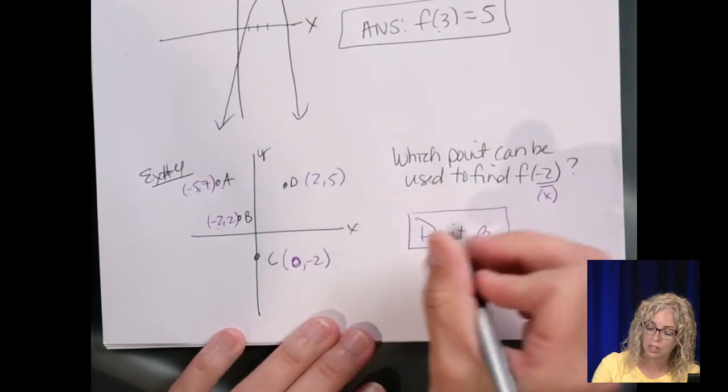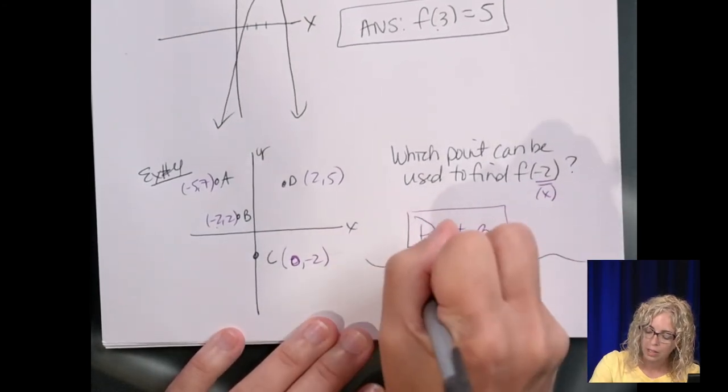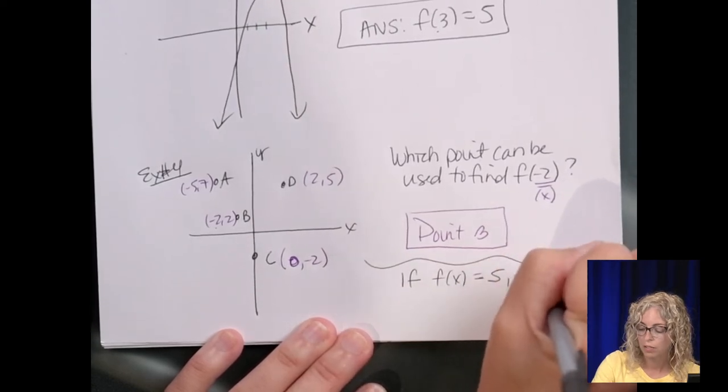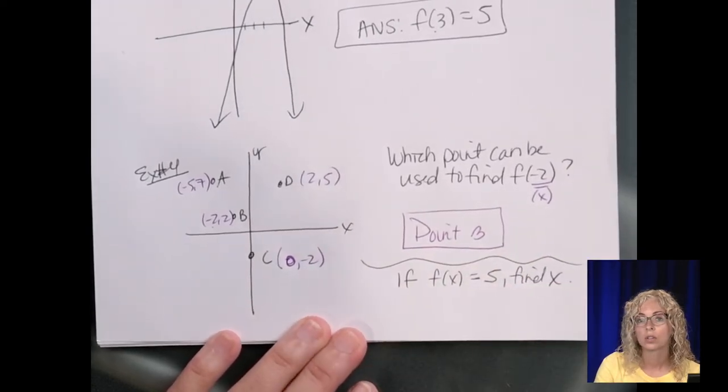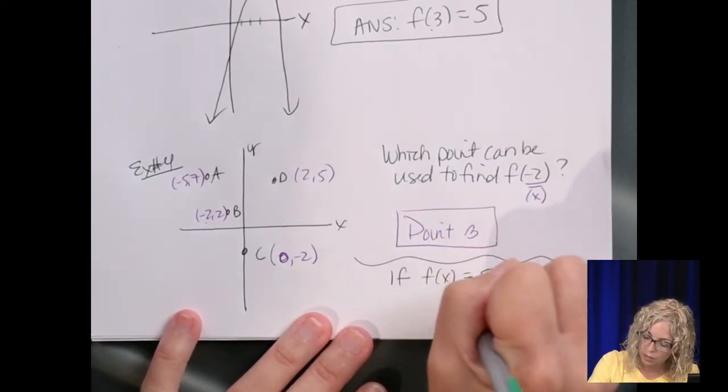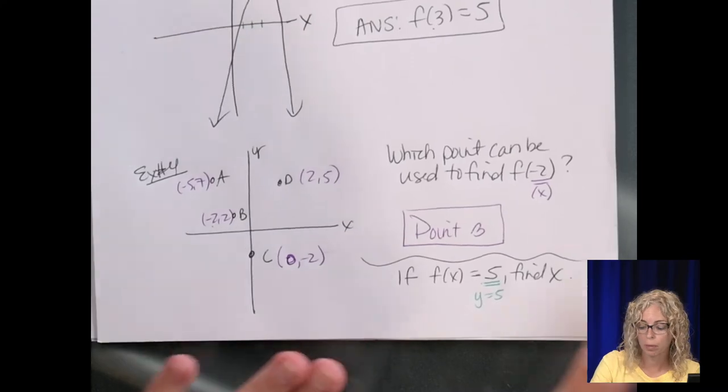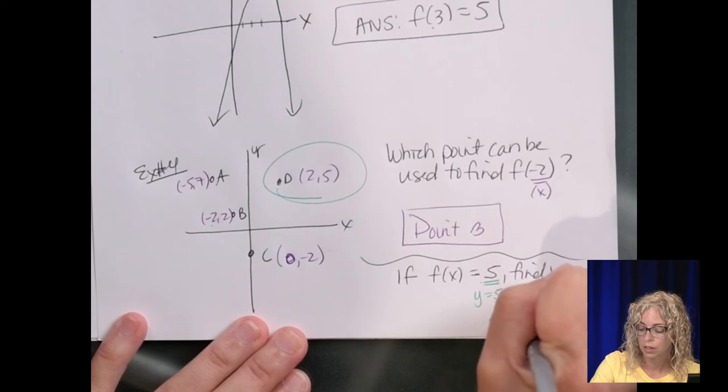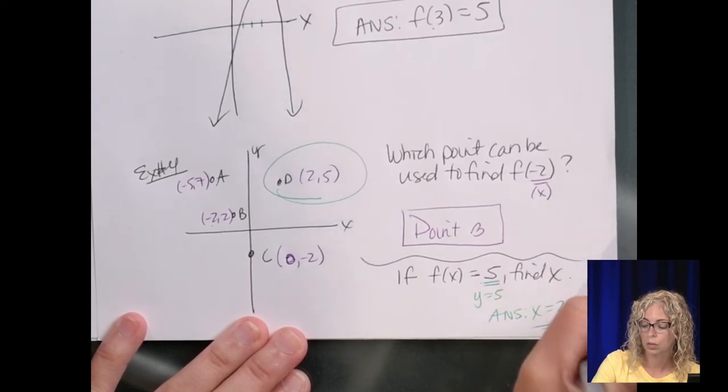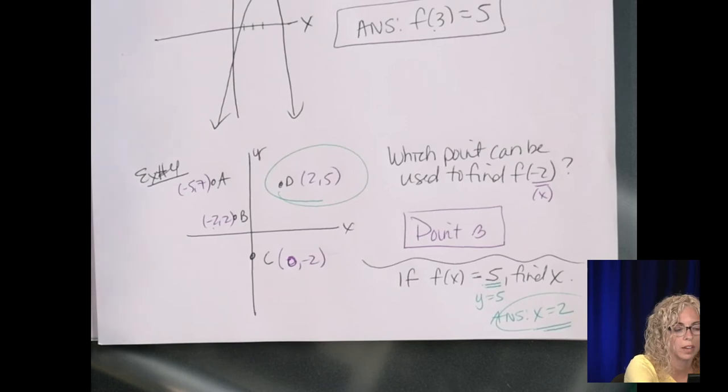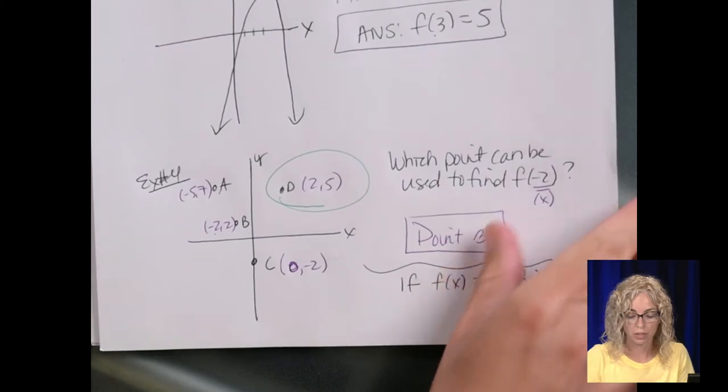There are other questions, too, that say, if f of x equals 5, find x. So then we want to know the point, right? So what this is saying is y is 5. So that point would be this point right here. So that means our answer, x, would be 2. Okay? So different ways of asking for either the x or y when you're given the input versus output.